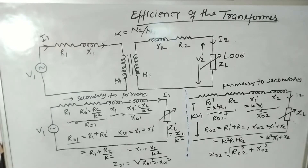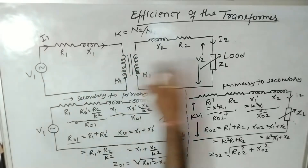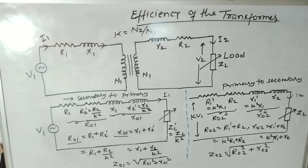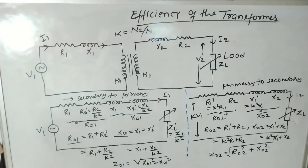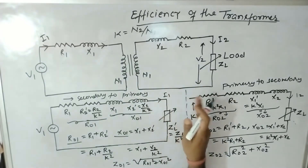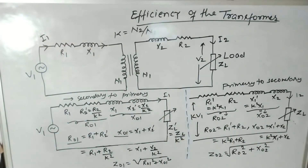Therefore, a transformer is a highly efficient device. Now, before going to the mathematical derivation and concept behind the efficiency of the transformer, we will first understand the copper loss of the transformer. In the previous lecture, I have already discussed the losses of the transformer — including no-load loss, core loss, and iron loss — as well as the copper loss. Here we will study copper loss a little differently before proceeding to the efficiency of the transformer.